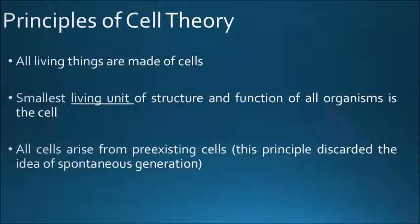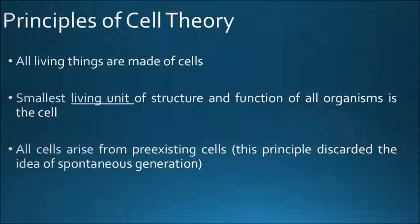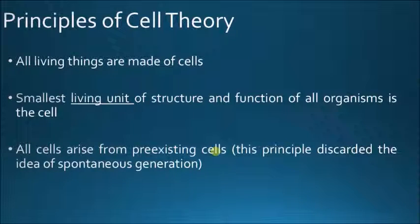Principles of the cell theory: all living things are made of cells. All things that are alive have a living unit in them. We don't know about life on other planets — whether they are cell-based or have something different. But the smallest living unit of structure and function of organisms is called a cell. The second principle states that all cells arise from pre-existing cells. Basically, you need to have an original cell; the cell must divide or reproduce in order to produce a secondary cell. Something we'll learn over time in this course.